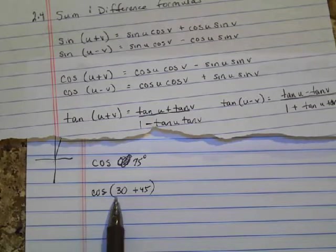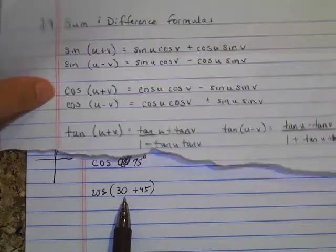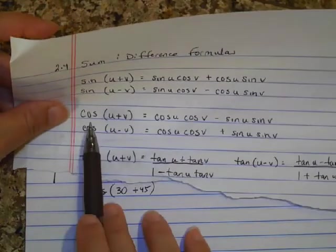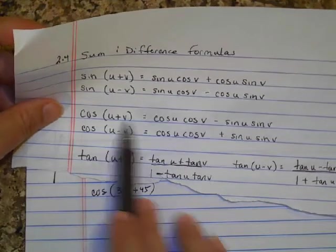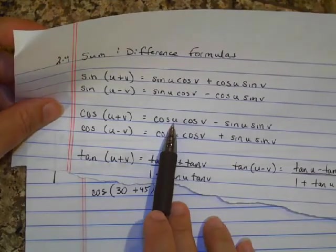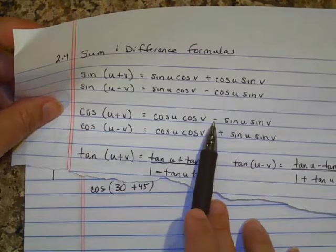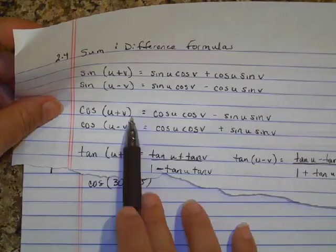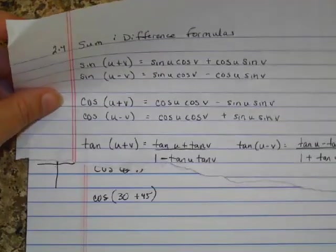Now, this is not distribute. You can't distribute here. You have to use the formula. So I'm going to go up and use cosine of two numbers added together. And that formula says take the cosine of the first number times the cosine of the second number, subtract sine of the first number times sine of the second number. So that's exactly what I'm going to do.